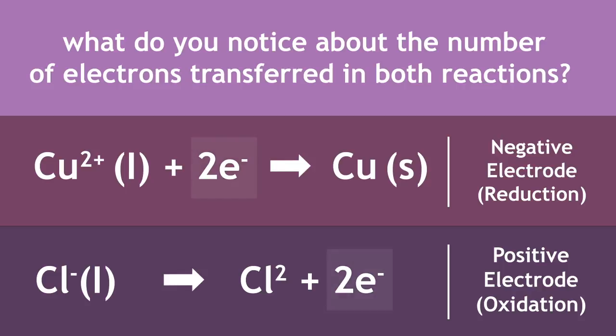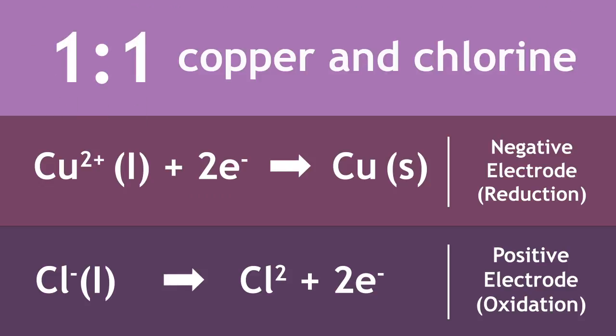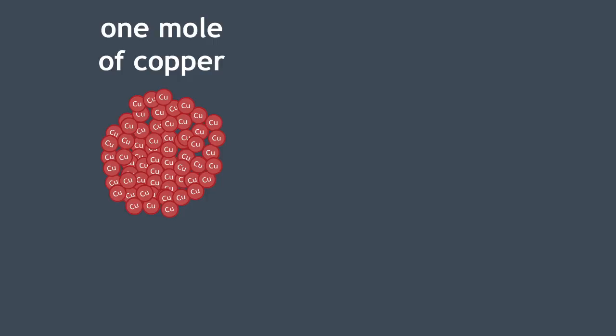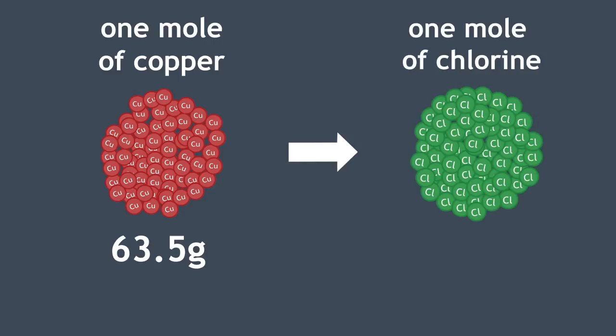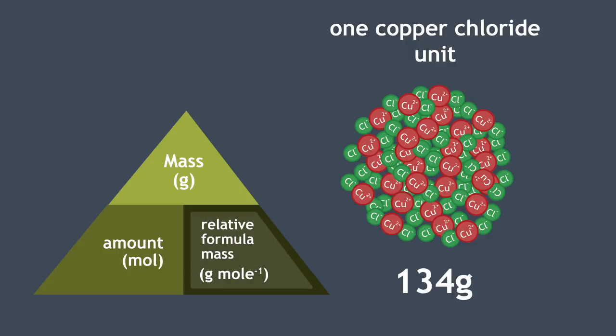There are two electrons being transferred in both processes. As a result, there is a 1 to 1 ratio between the copper and the chlorine gas. So for every 1 mole of copper produced, which is 63.5 grams, it produces 1 mole of chlorine gas, which can be thought of as either 24 decimetre cubed or 71 grams. Also, when these masses are combined, this represents the formula mass of 1 copper chloride unit at 134 grams.